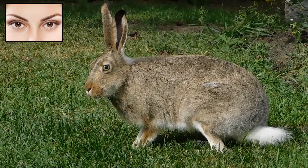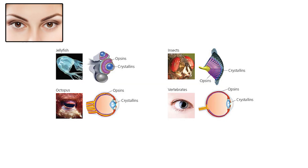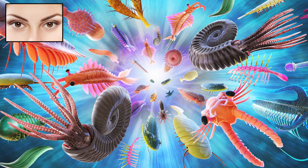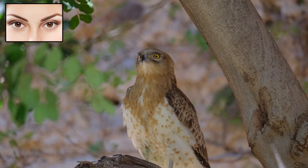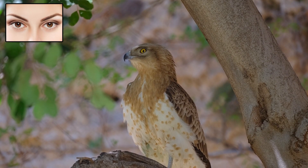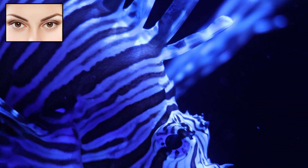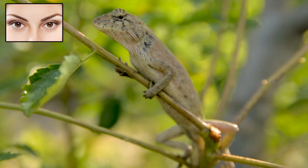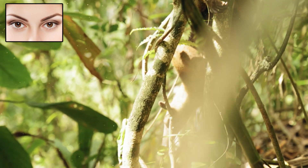These visual adaptations give animals massive survival advantages, whether it's finding food, avoiding danger, or communicating through visual signals. Eyes also played a major role in driving evolutionary change. During the Cambrian explosion around 540 million years ago, the development of eyesight triggered an evolutionary arms race. Predators evolved sharper vision to hunt more effectively, while prey developed better camouflage, speed, or defensive traits to escape. This sudden burst of evolutionary innovation led to a huge rise in biodiversity.